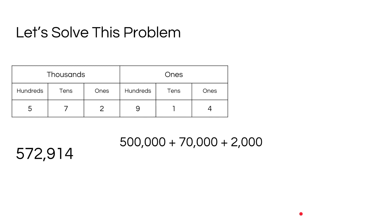Now let's finish the last three digits of 9, 1, and 4. Now we wrote the expanded form of 572,914.